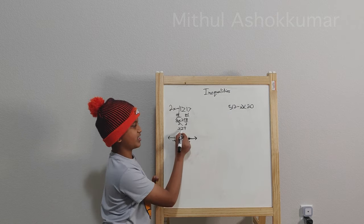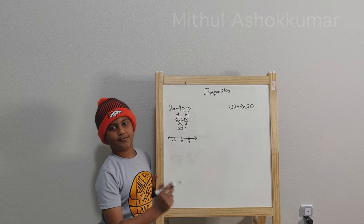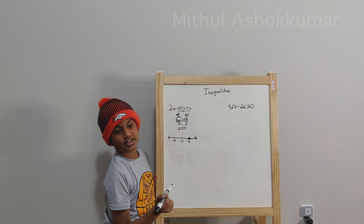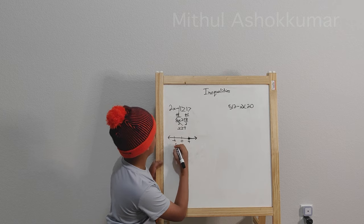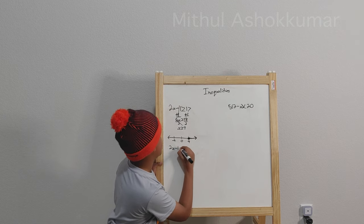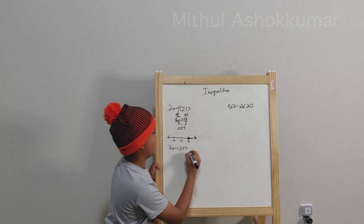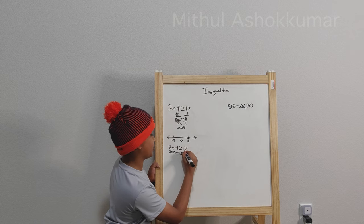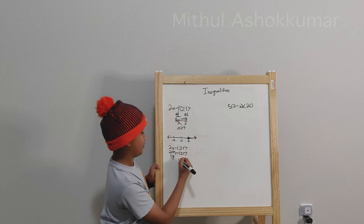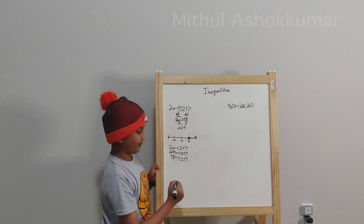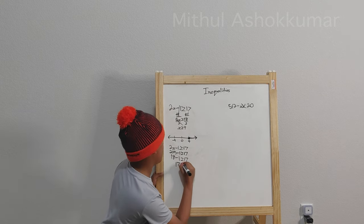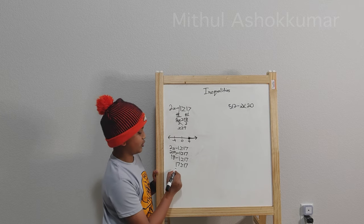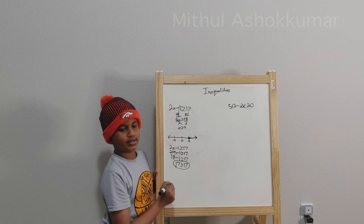But how can I make sure that this is actually true? We can substitute a value that is true and a value that is false. Let's take a true value — let's go with 9. We have 2x minus 1 is greater than or equal to 17, and we're talking about x equals 9. So then we would have 2 times 9 minus 1 is greater than or equal to 17. 2 times 9 is 18, and 18 minus 1 is 17, which is greater than or equal to 17. Although 17 is not greater than 17, it is equal to 17. So this is a true statement — 9 will work.